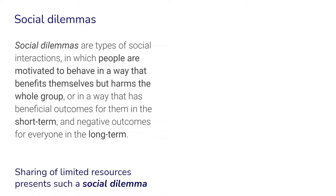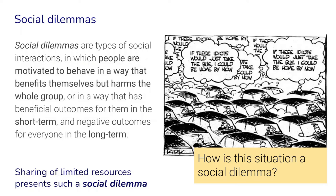A special type of social interactions are so-called social dilemmas. These are situations in which people are motivated to behave in a way that benefits themselves but harms the whole group, or in a way that has beneficial outcomes for themselves in the short term and negative outcomes for everyone in the long term. The sharing of limited resources presents such a social dilemma. Using the traffic jam situation, think about how this situation is in fact a social dilemma — how would you explain to somebody why this traffic jam is a social dilemma?